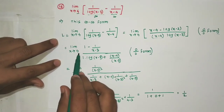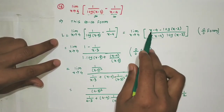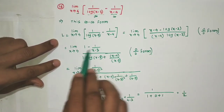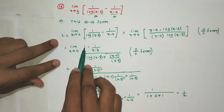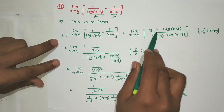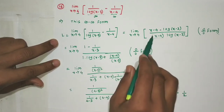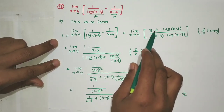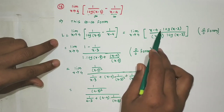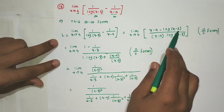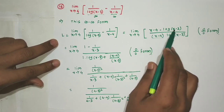Applying L'Hôpital's rule: derivative of numerator (x-4 - log(x-3)) is 1 - 1/(x-3). The denominator log(x-3)·(x-4) is differentiated using the product rule.